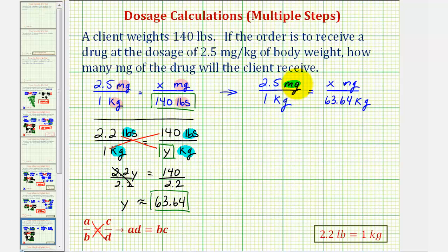Now notice how the units on top and the units on the bottom are the same. So now we can cross multiply and solve for x, which will tell us how many milligrams the client should receive.